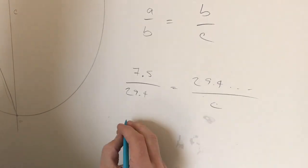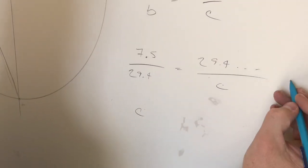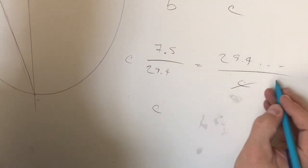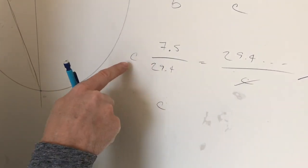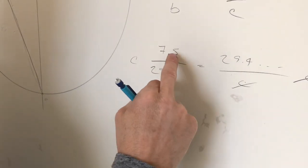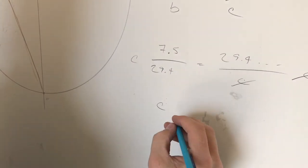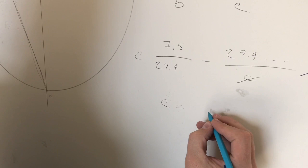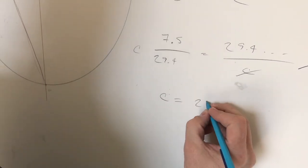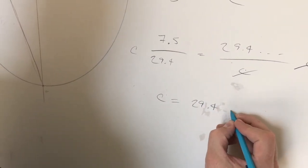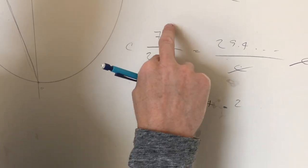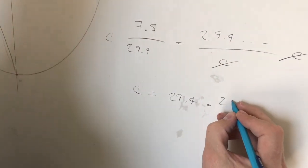So if I multiply both sides by c, I get c over here. And then if I want to get this over here, I'm going to flip that and divide by it over here. So that means I'm going to have c is equal to 29.4 times, remember we flipped them because we're dividing, 29.4 over 7.5.